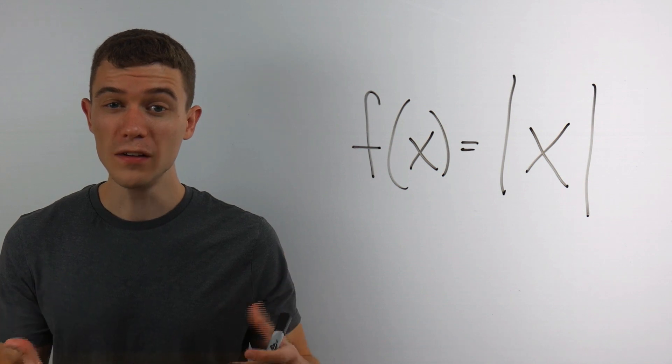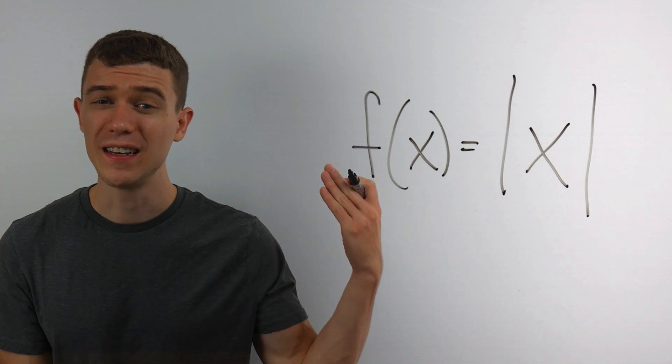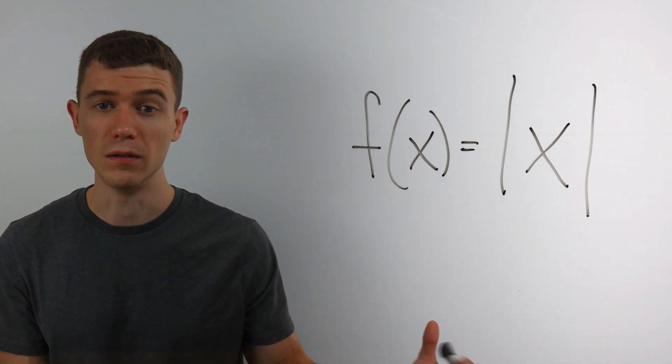The absolute value just outputs the magnitude of the number. It essentially just drops the negative.